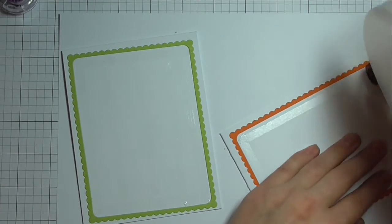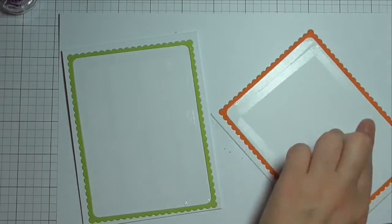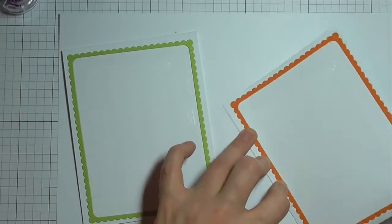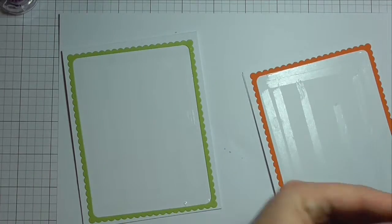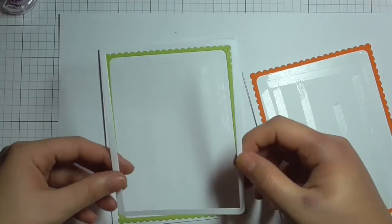So I'm just applying some ATG tape. Now any adhesive would do. I'm just kind of covering the inside of that frame and I'll then be able to use an inlay technique to put all of those different die cuts back into place.